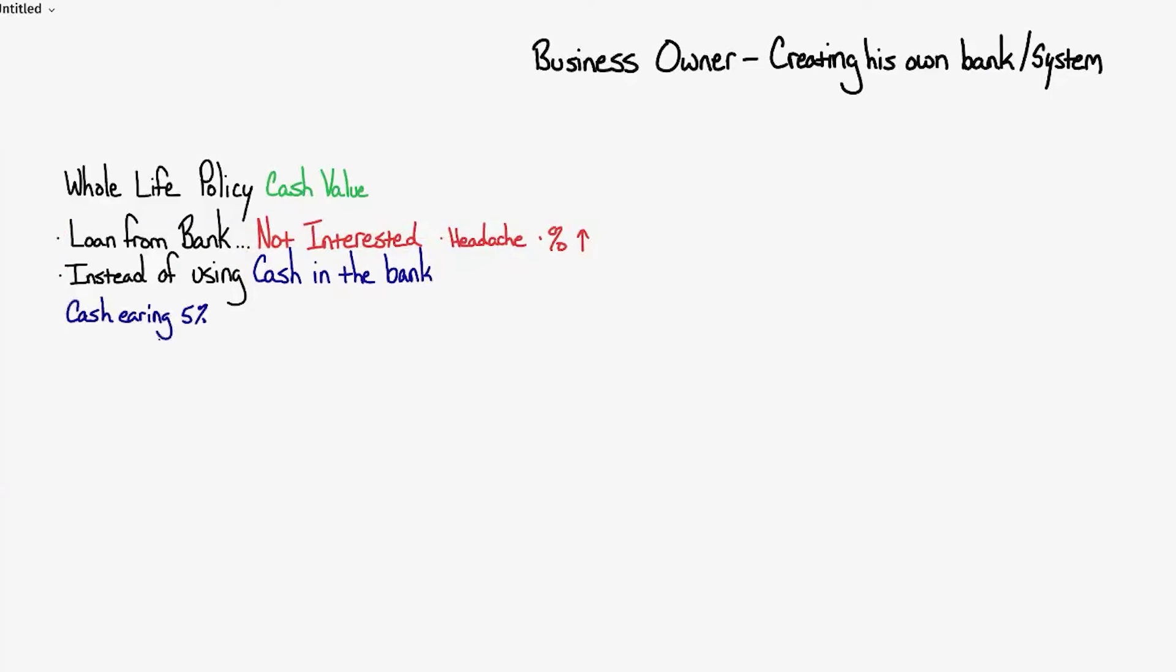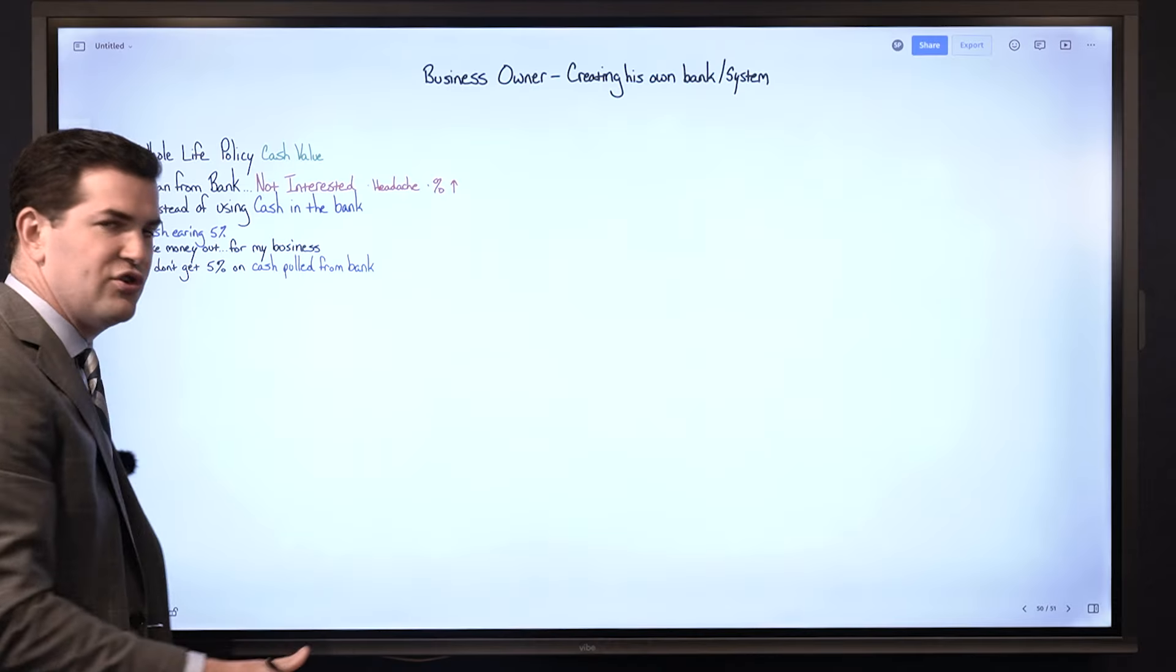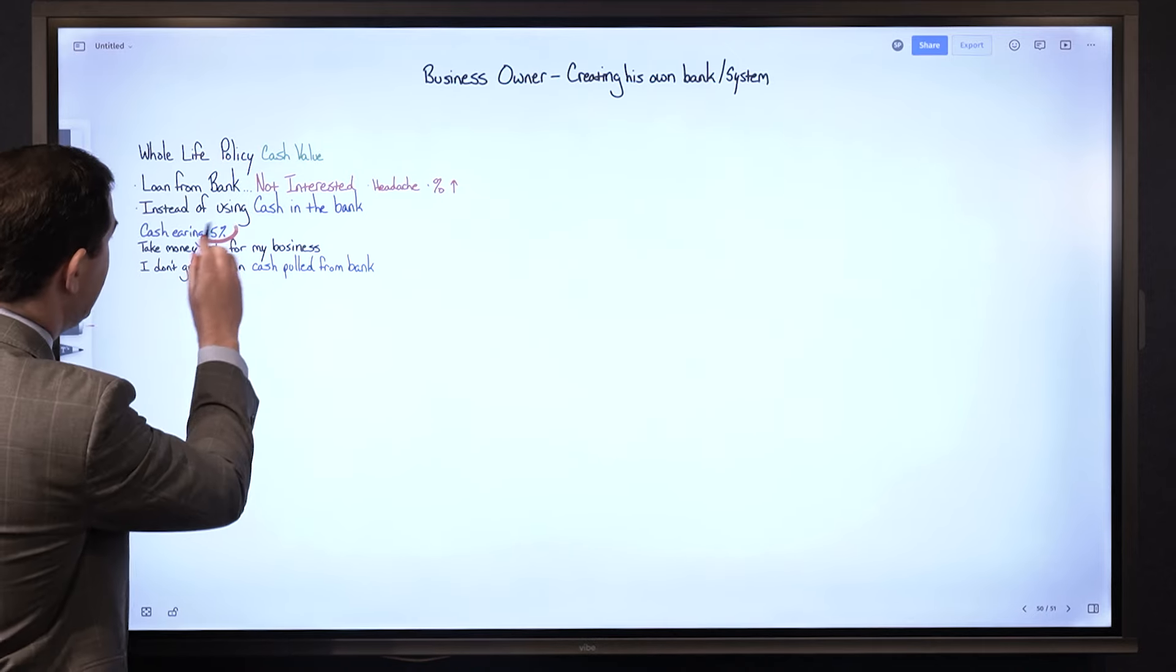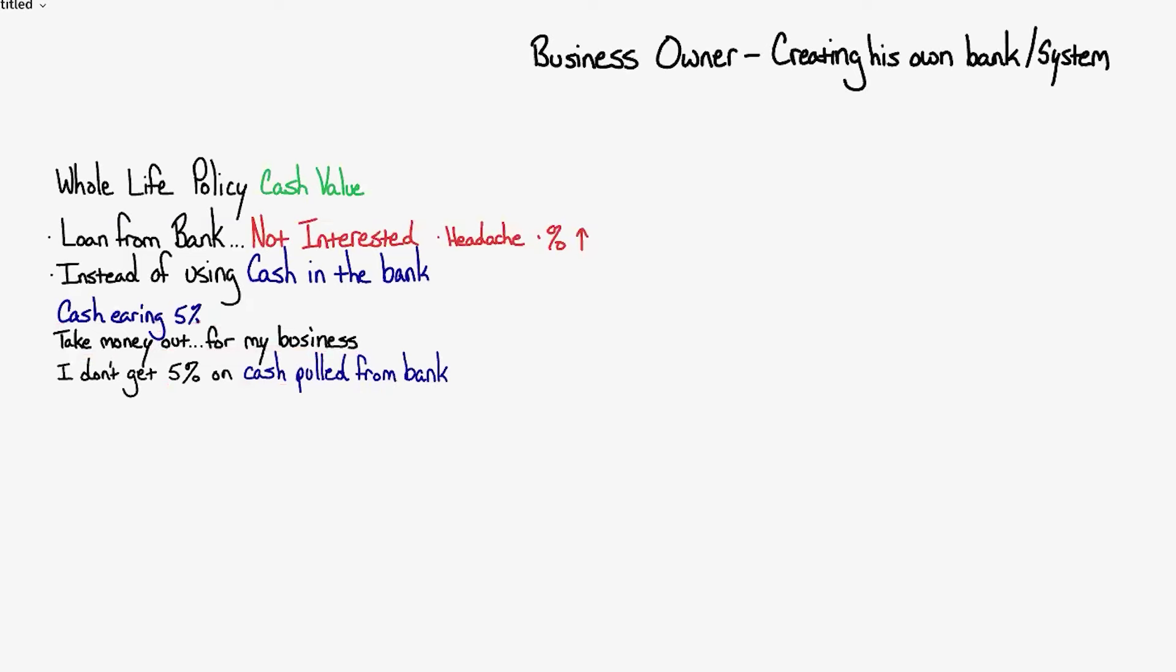Let's pretend he's earning 5% with money in the bank. Here's why he doesn't want to use cash in the bank: if he takes money out of that account that's earning 5% for his business, the money that he takes out he no longer gets 5% on. He doesn't want to do that because the money has a lost opportunity cost.